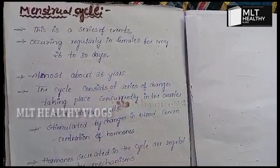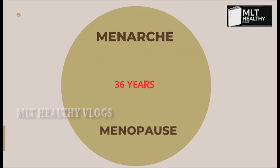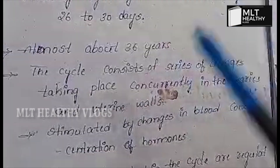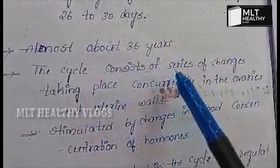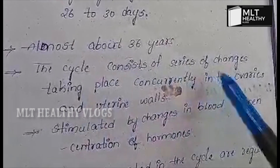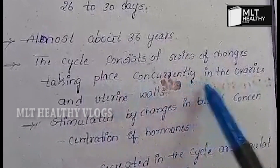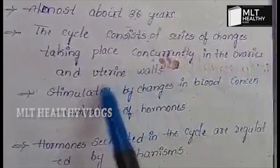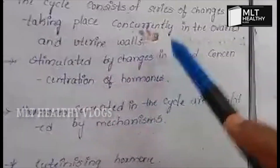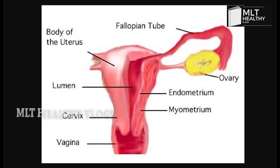From first Menarche to Menopause is almost 30 years. The cycle consists of a series of changes taking place concurrently in the ovaries and uterine walls. The menstrual cycle involves a series of changes in the ovaries and uterine walls.